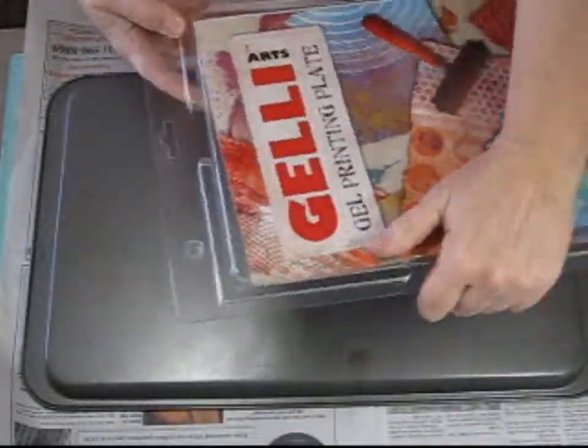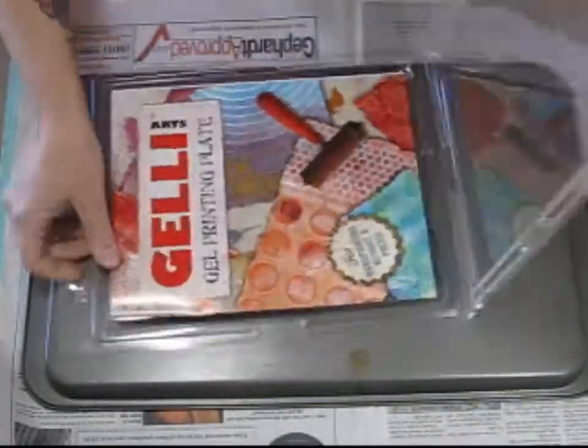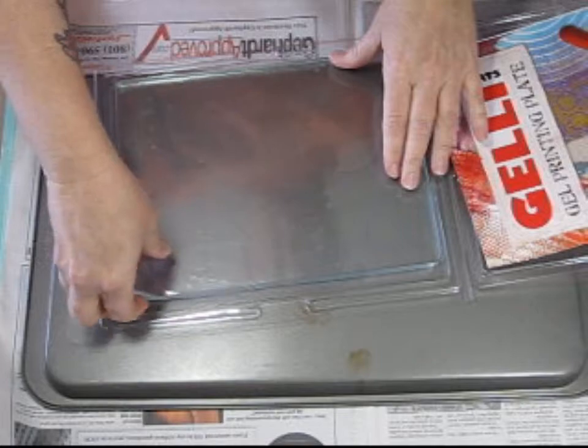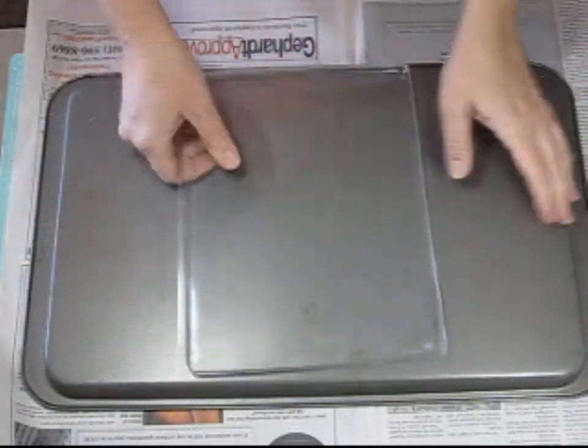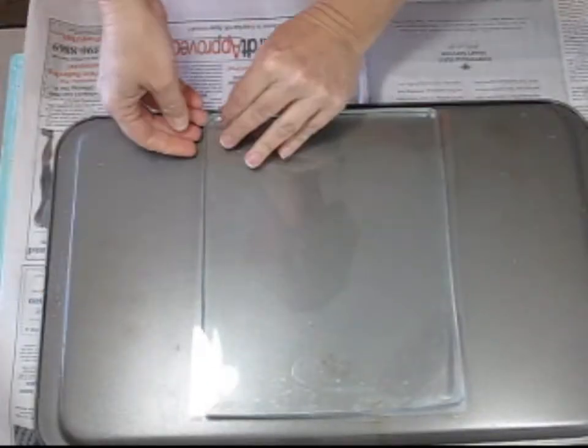So this is a jelly plate. You want to keep the packaging that it comes in because it's a great way to store the jelly plate. So you just take your jelly plate out, keep all the packaging and instructions, and take off the two plastic covers.